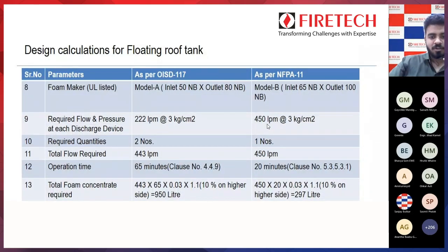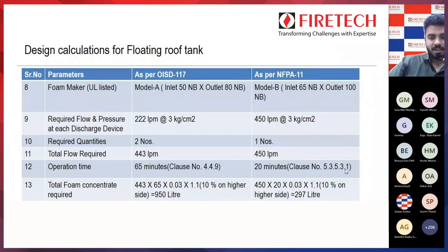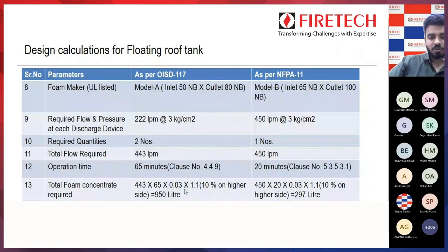Required quantities: 2 for OSD 117, 1 for NFPA 11. Total flow requirements are 443 lpm and 450 lpm respectively. Operation time: per OSD 117 clause 4.4.9 it is 65 minutes; per NFPA 11 clause 5.3.5.3.1 it is 20 minutes. Total foam concentrate required is: total flow × operation time × 0.03 × 1.1, giving 950 litres as per OSD 117 and 297 litres as per NFPA 11.